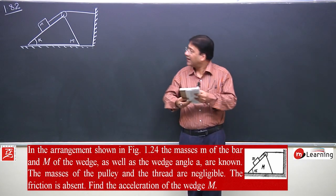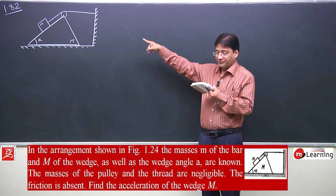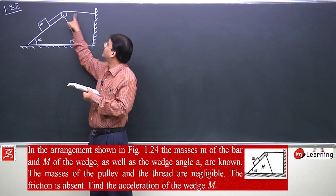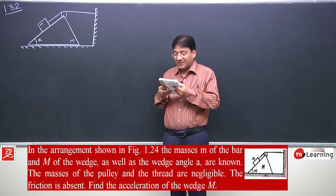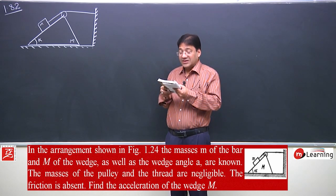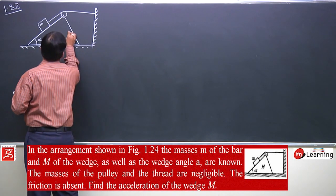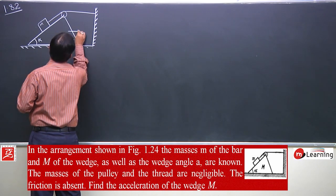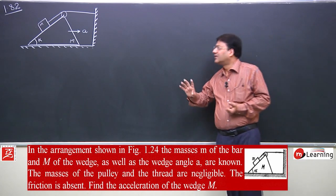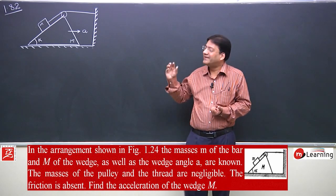The mass small m and capital M are as indicated in the arrangement. A prism having angle alpha, capital mass M, small mass m — the block lying over the prism. The mass of pulley and thread are negligible. The friction is absent. Find the acceleration of wedge M. This wedge would accelerate in this direction and we need to determine acceleration A of this wedge M.